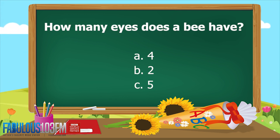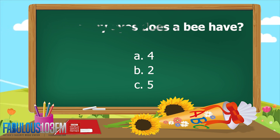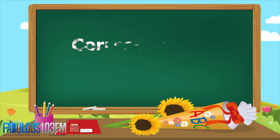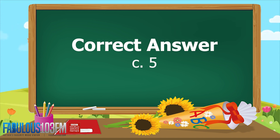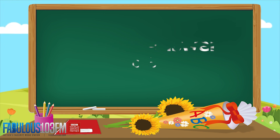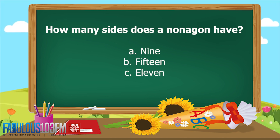The correct answer is actually C — 5. They have one on each side of their head and three small ones in the middle. Now, new questions for today: how many sides does a nonagon have? A) 9, B) 15, or C) 11?